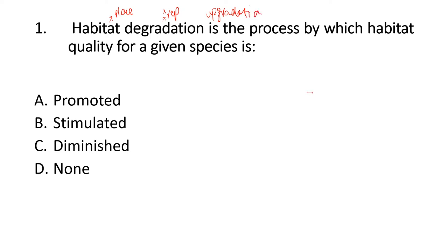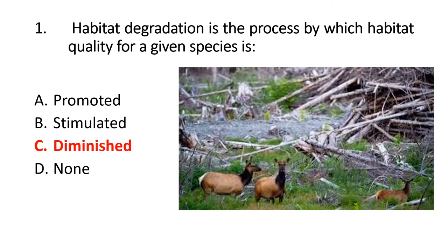For example, if we have a forest and we cut it through deforestation, the habitat for species like squirrels is degraded. But for new species like butterflies and birds, the habitat may be improved. So for one species it is degraded, but for other species it may not be. The question asks about habitat degradation, and the right option is C: diminished.